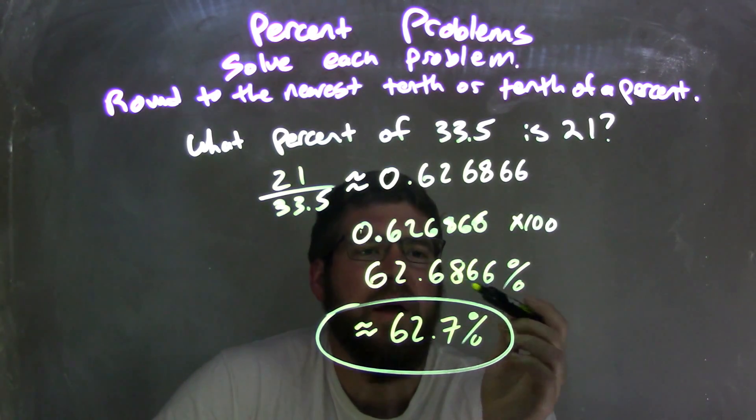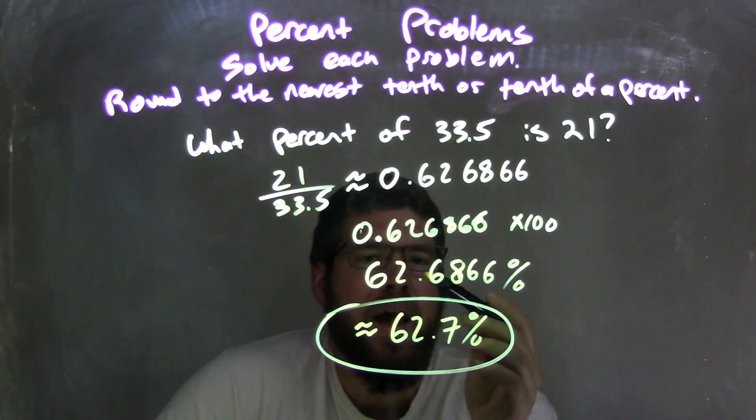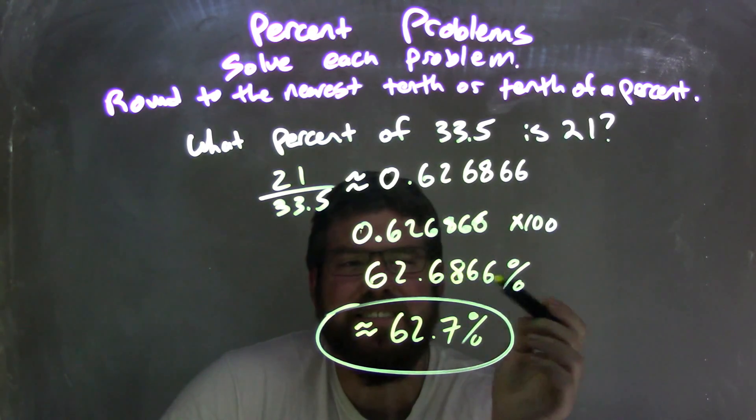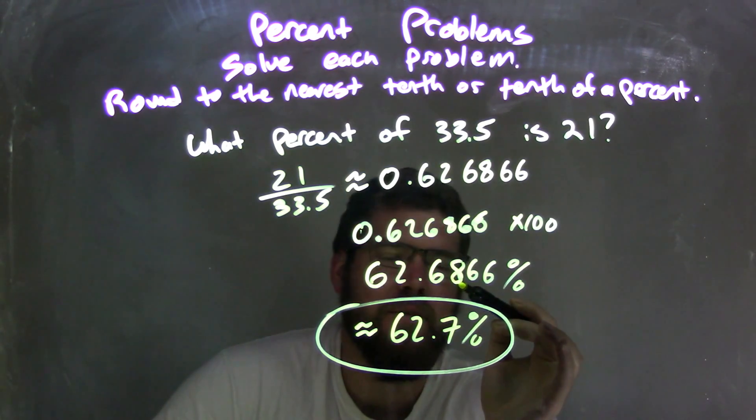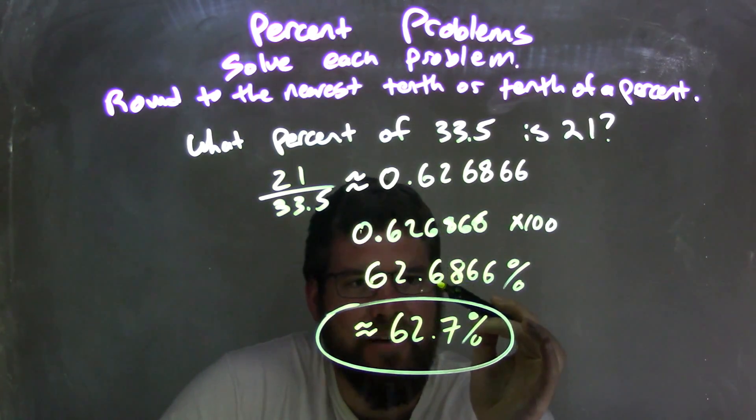And then, from there, I need to round this one, though, 62.6866, rounding to the nearest tenth. So I look at that six right here. What's the number right to the right, which is the eight, which makes that six round up.